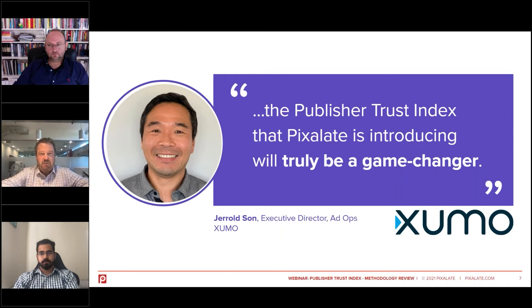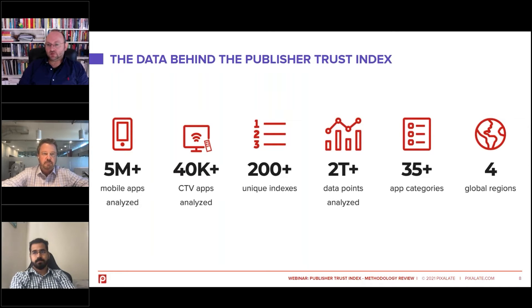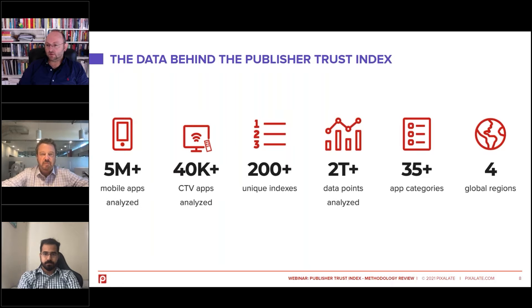We've also had some great validations for the new publisher trust index. A partner of ours, Zumo, has said that introducing the Pixelate trust index is truly a game-changer in the industry. So before we begin talking about the publisher indexes, let's talk a little about the data behind it. In order to produce the publisher trust indexes, we analyzed data from more than five million mobile apps for Android and iOS, and more than 40,000 connected TV apps. We produced more than 200 distinct publisher indexes for various slices of IAB categories — specifically more than 35 IAB categories across four broad geographical regions. In order to do all this, we had to process more than two trillion distinct data points.